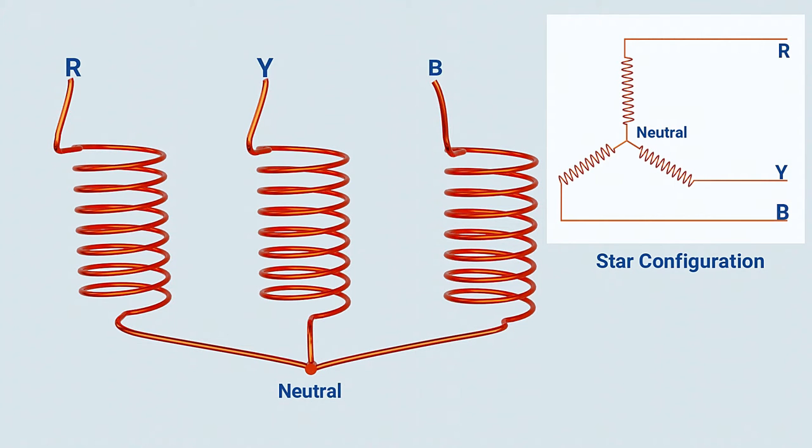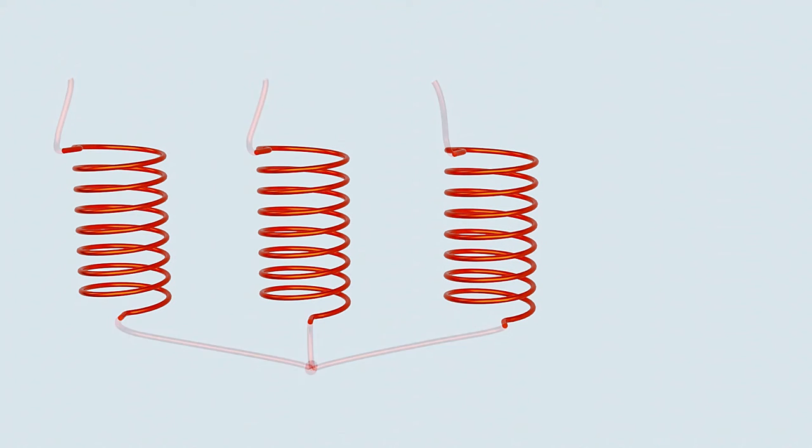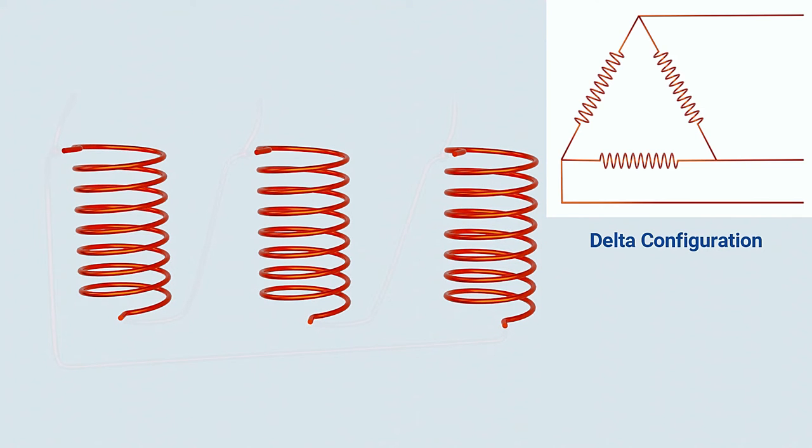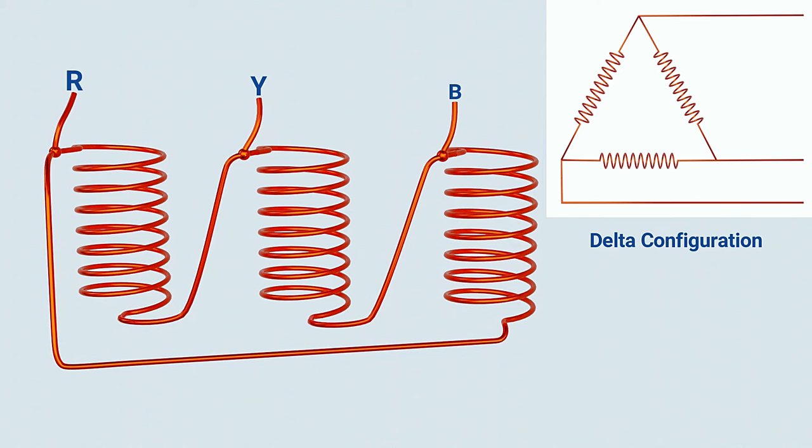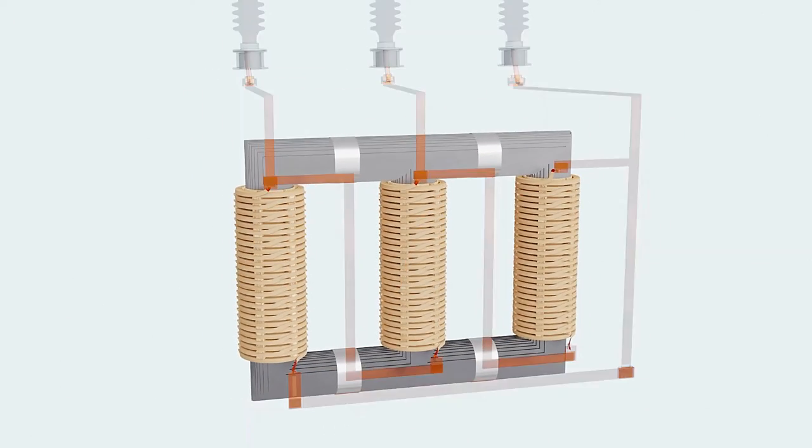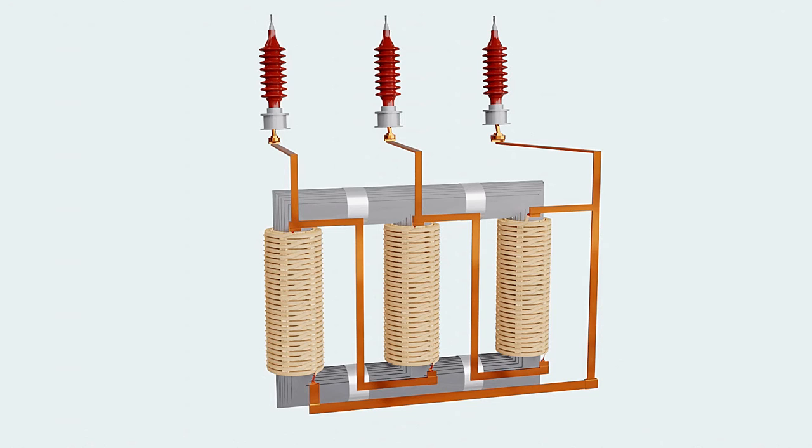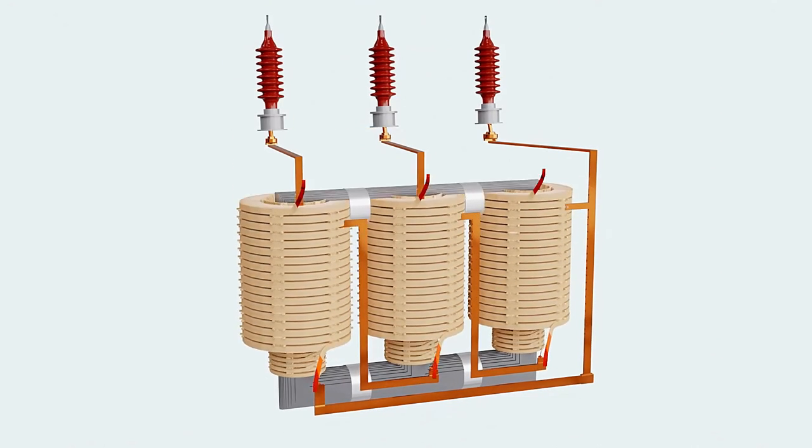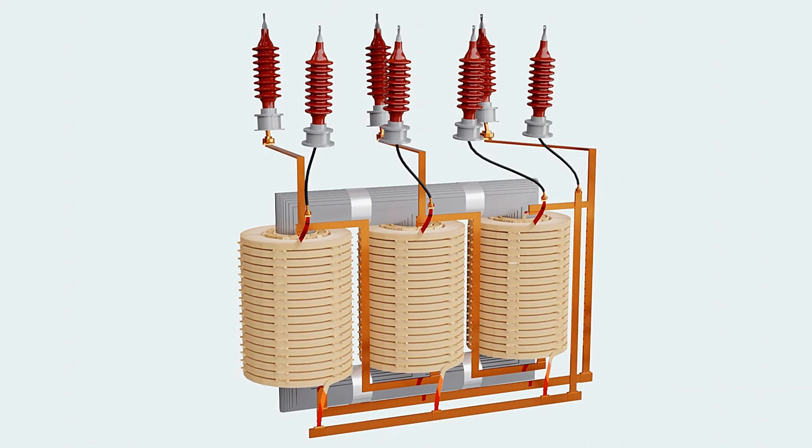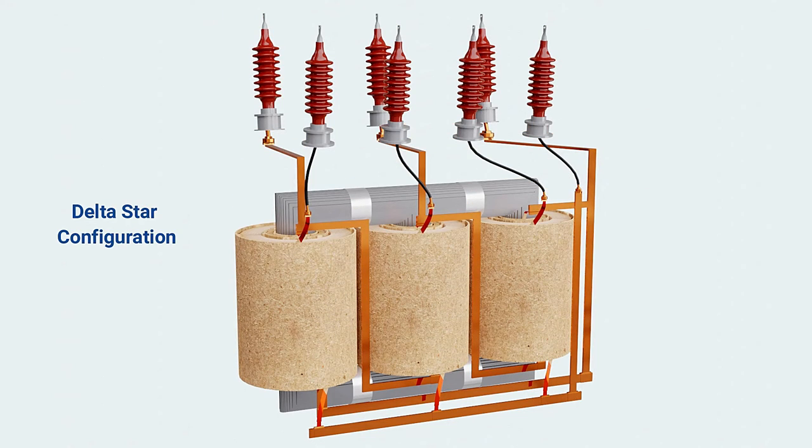Another method of connection is called delta connection, in which a starting of one coil is connected to the end of the other. No neutral point is obtained from this configuration. In the model shown here, the primary winding is connected in delta configuration, and the secondary winding is connected in a star configuration. This type of connection is known as delta star configuration.